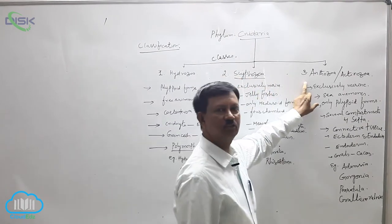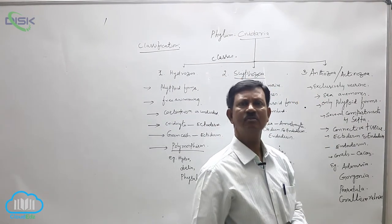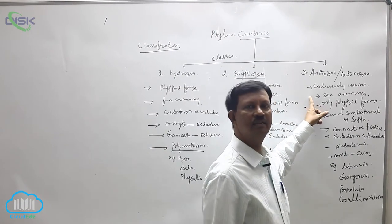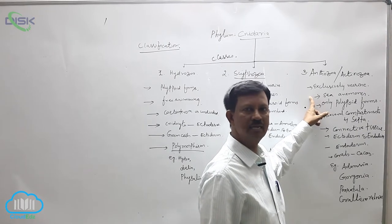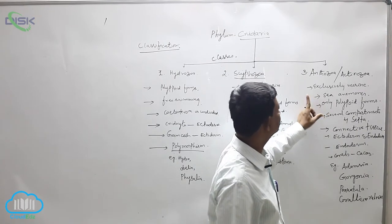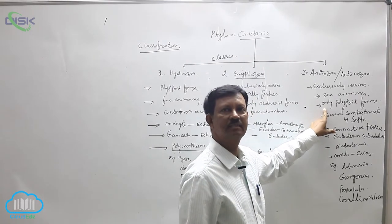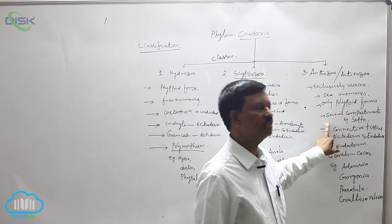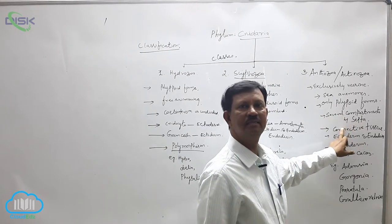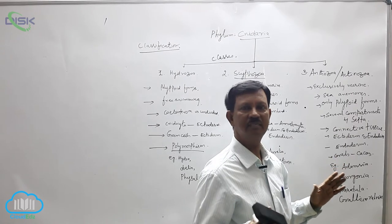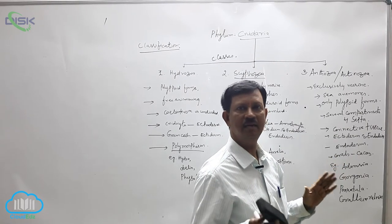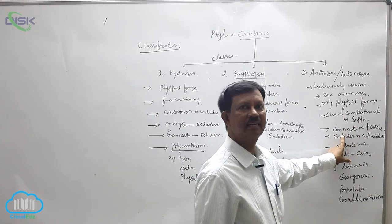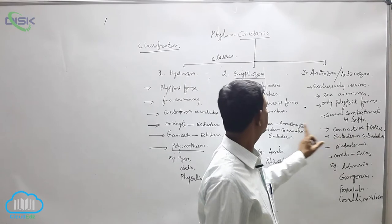The third class is Anthozoa or Actinozoa. These are also exclusively marine animals, not found in freshwater, and are commonly known as sea animals. They are mostly sedentary. Only polypoid forms are present and medusa is completely absent in this class. The coelenteron is divided into several compartments by septa — each compartment is separated by a membrane known as the septa. Mesoglia contains connective tissue, but not amoebocytes.